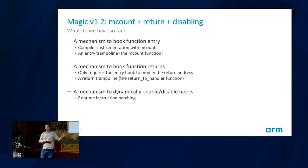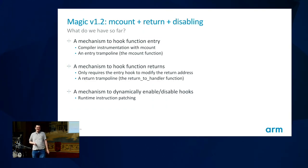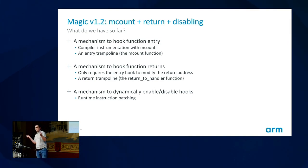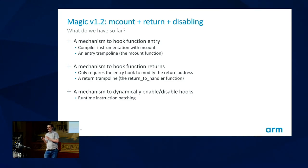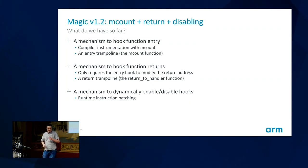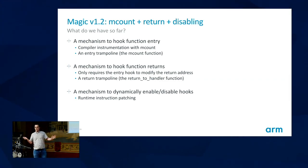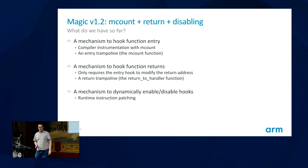This is a pretty standard FTrace implementation — lots of architectures get to this level. We have three things: a mechanism to hook function entry using compiler instrumentation without modifying source code; a mechanism to hook function returns, essentially for free by tracking at entry; and a mechanism to enable and disable it. That covers the fundamental aspects needed for a production-quality FTrace architecture implementation.